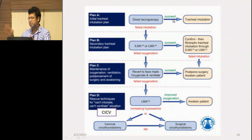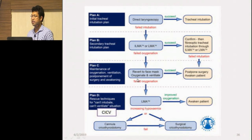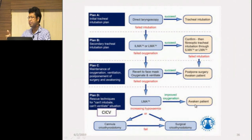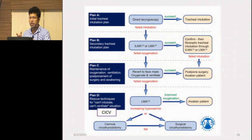Plan A is direct laryngoscopy. If that fails, Plan B is LMA — if ventilation and oxygenation are maintained with LMA, that is acceptable. If LMA also fails, Plan C is to go back to face mask ventilation using a Bain circuit or Ambu bag. If that also fails, attempt LMA once more or try to awaken the patient. If the patient is awake and breathing, that is the ideal outcome.